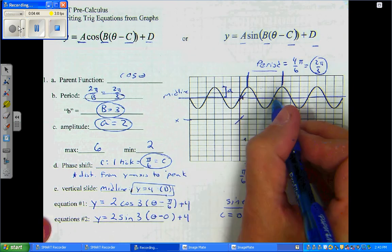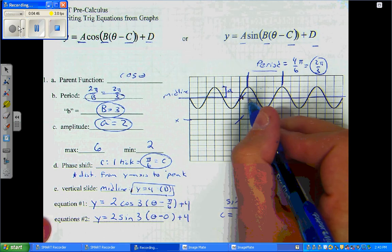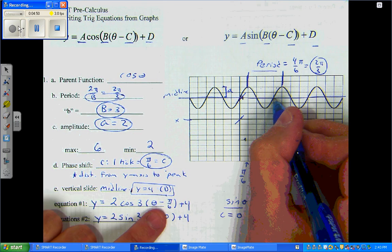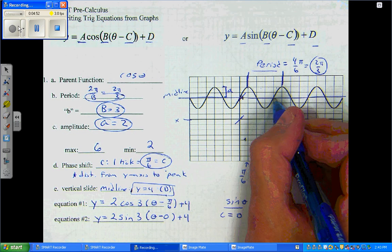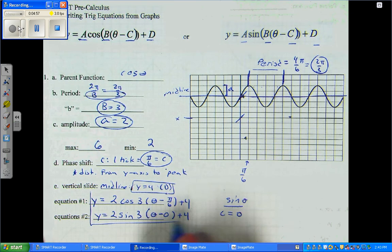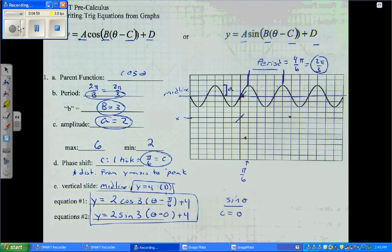Now, you could pick over here. It's also going up and you would count 1, 2, 3, 4. So, you could make this minus 4 pi over 6 as well. And, you'd be okay to do that. And, these are our two equations for our graph.